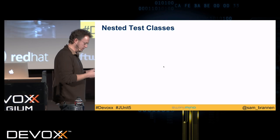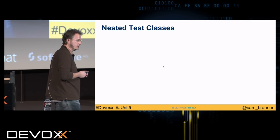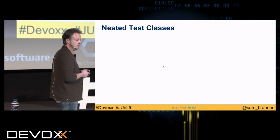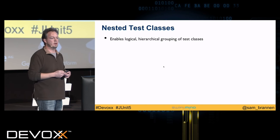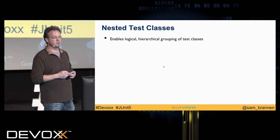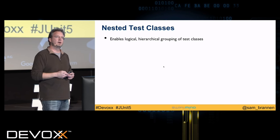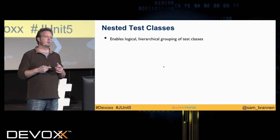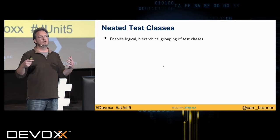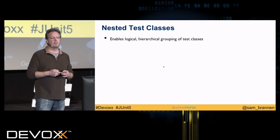The next feature is nested test classes. There were some custom runners for JUnit 4 to do this, but now it's built into JUnit Jupiter. This basically enables what we call logical hierarchical grouping.